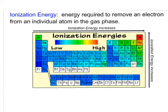Let's now look at ionization energy. Ionization energy is the energy required to remove an electron from an individual atom in the gas phase. It's very much related to electronegativity. We see that helium has a very high ionization energy, meaning it takes the most energy to remove one of its electrons compared to removing an electron from any other element on the periodic table.